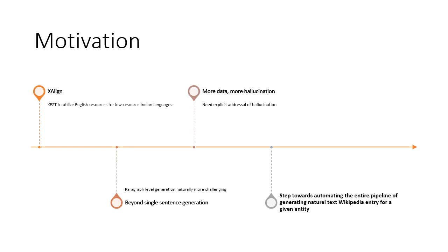The more data you have, the greater will be your model's propensity for hallucinations. For this, we put forward several explicit measures for reducing hallucination in this problem. All in all, our work represents a step towards automating the pipeline of generating natural text Wikipedia articles for a given entity.